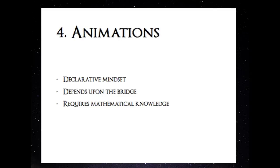A note: they introduced, around version 38 or 39, an extra component in the React Native API called Easing. It makes the most common interpolation calculations for us — like cubic bezier, ease in, ease out — just like CSS. At the end, it's another way of making the same thing.